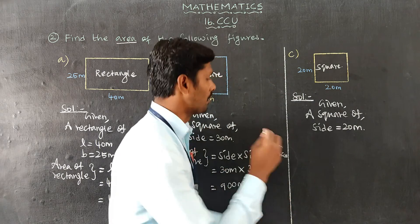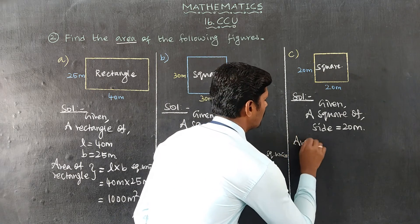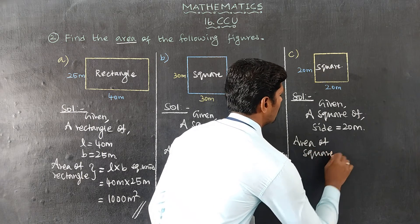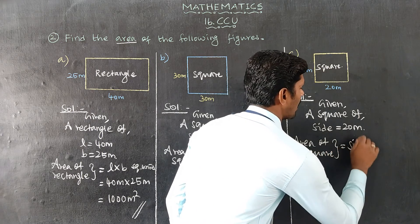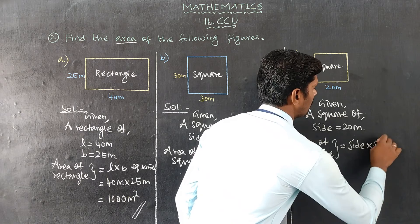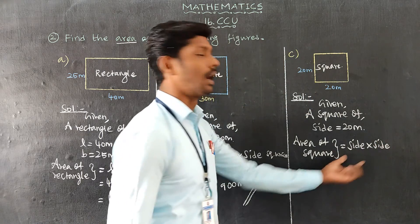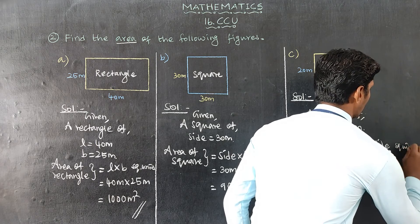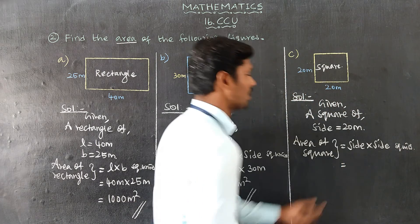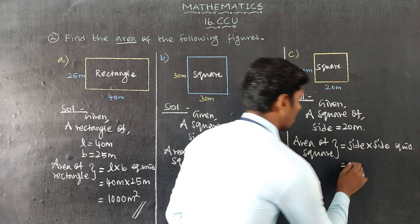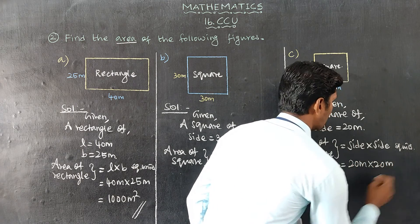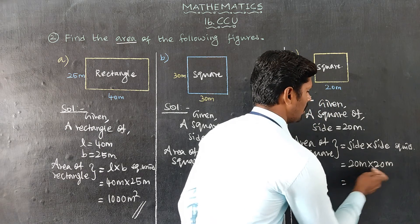Side value is 20 meters. So, 20 meters into 20 meters equals 400 square meters.